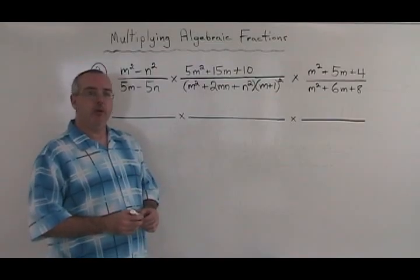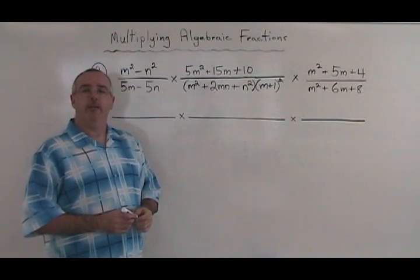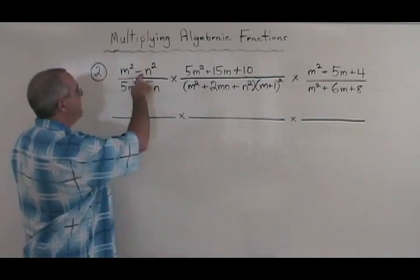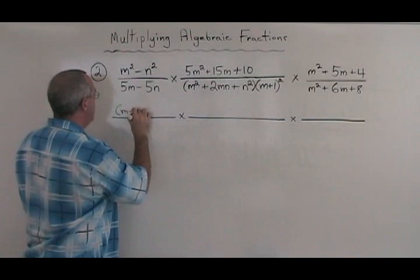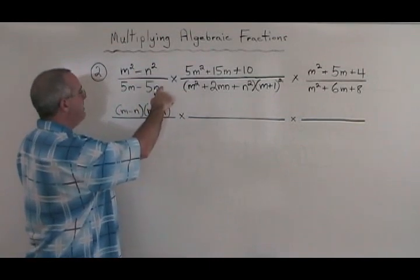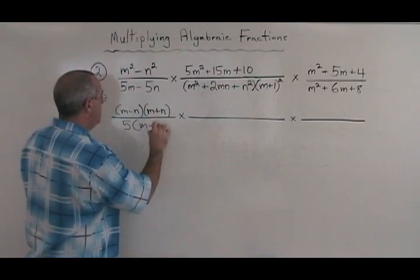In example 2, we have 3 algebraic fractions that are being multiplied. And the first step, as usual, is to factor everything. This first numerator is the difference of squares and gives us m minus n, m plus n. The denominator is a common factor and gives us 5m minus n.